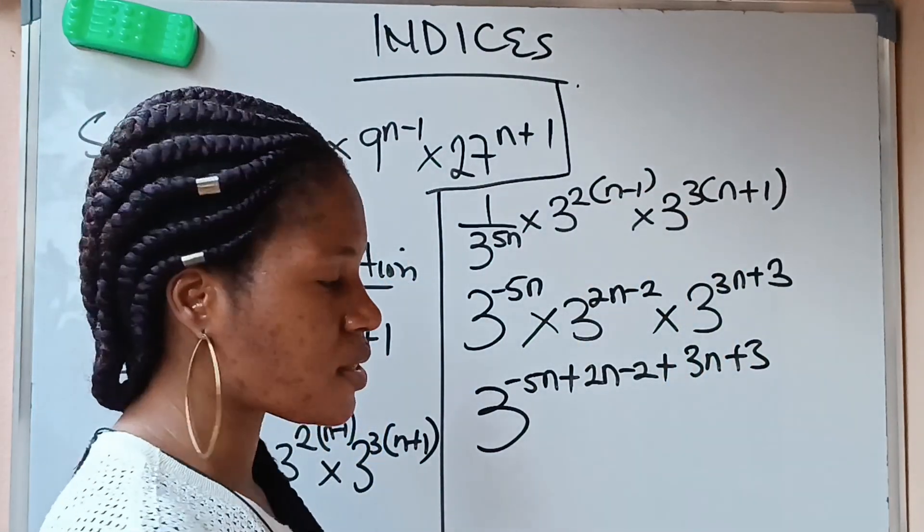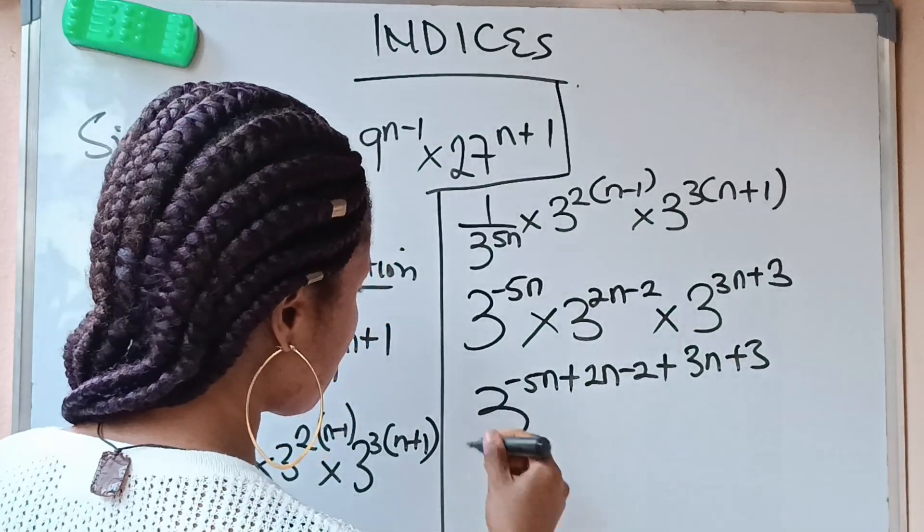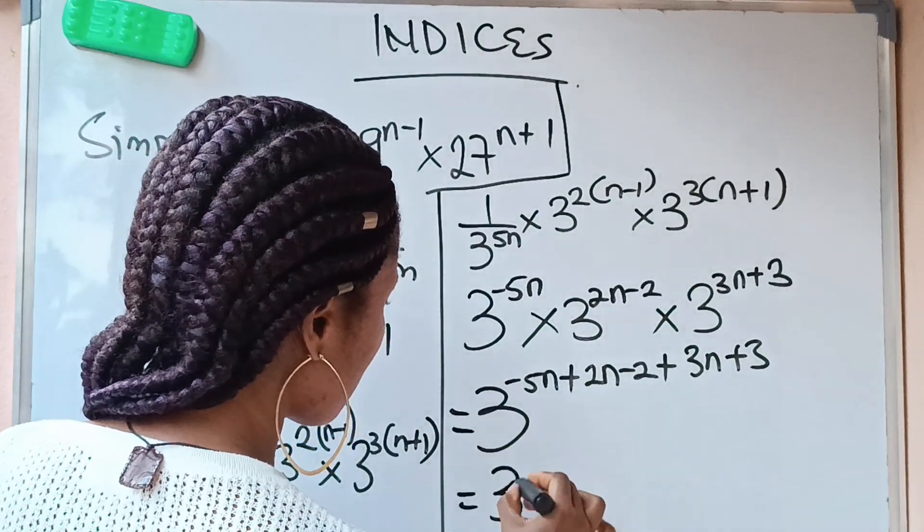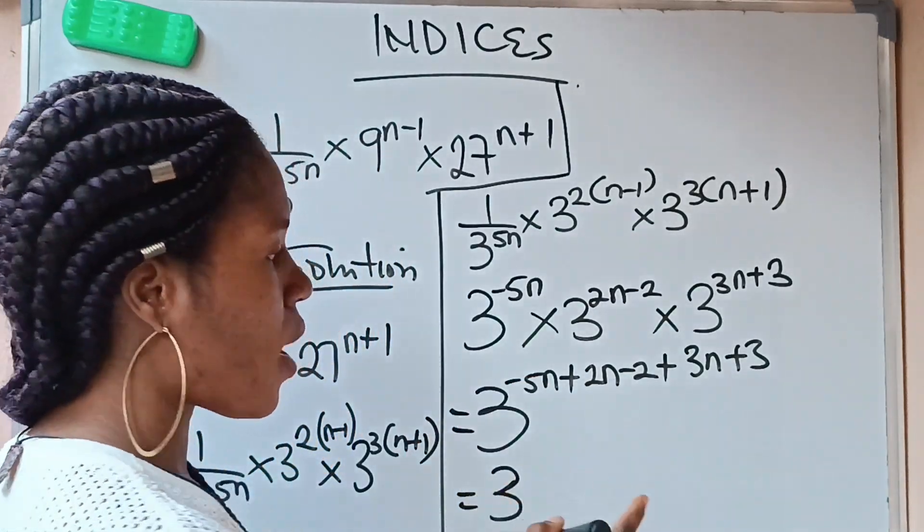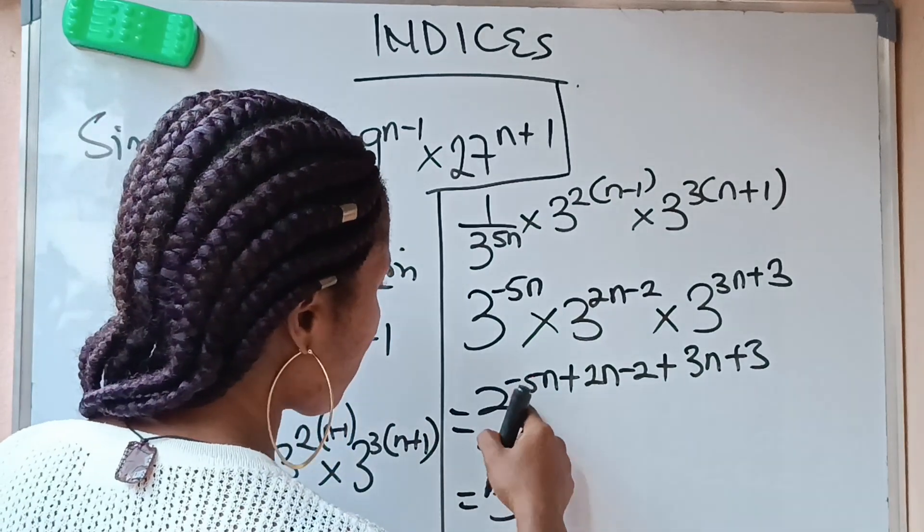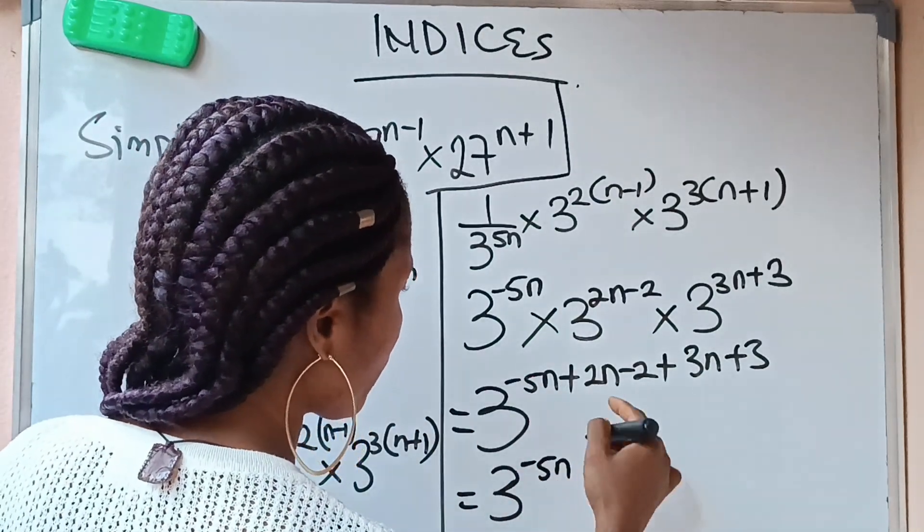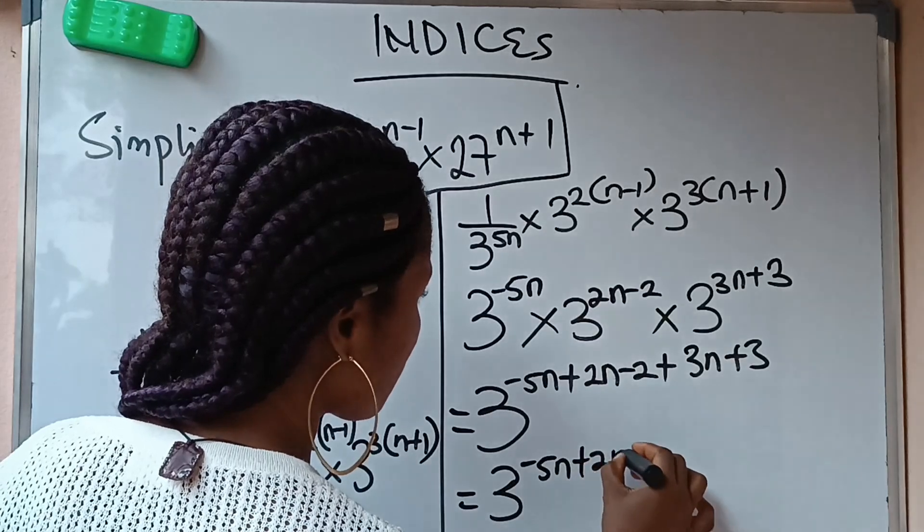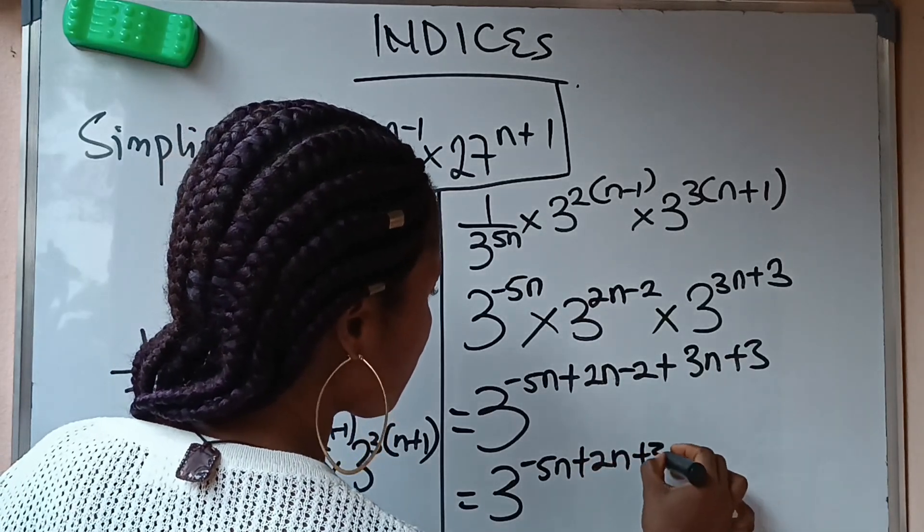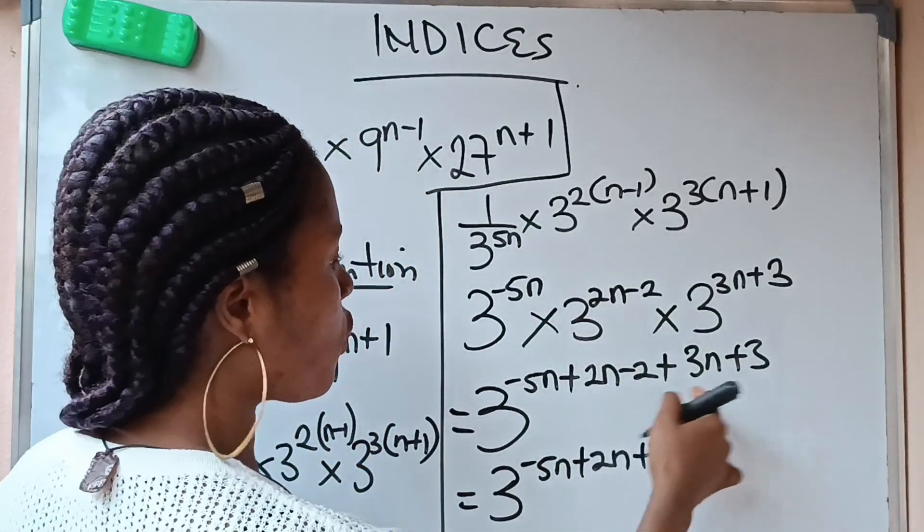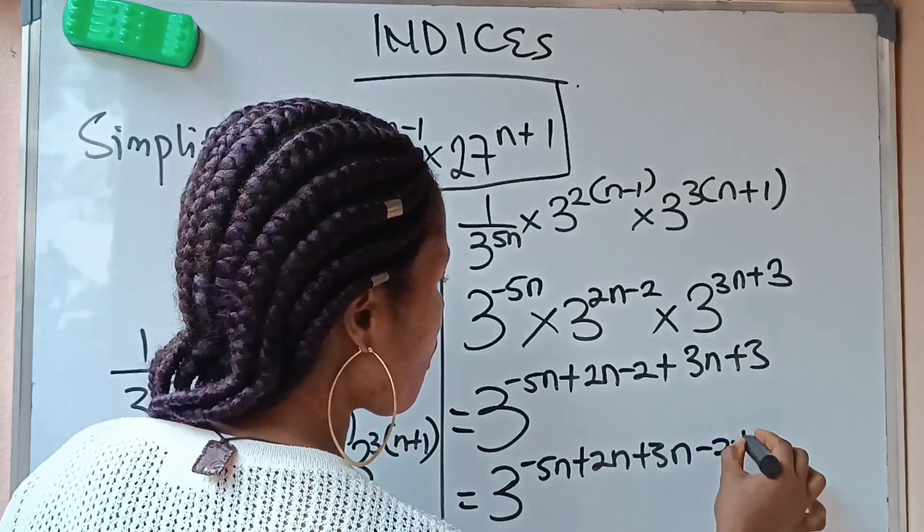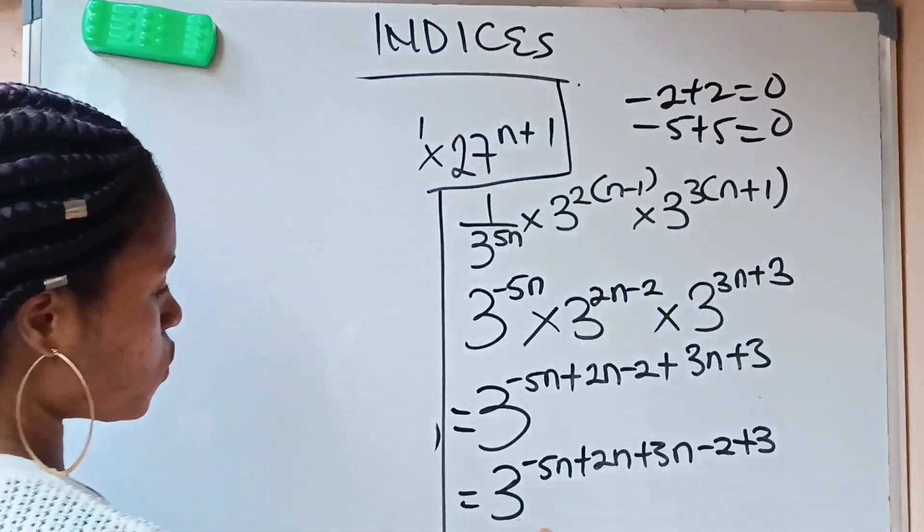You are adding the powers. Now let us go ahead and solve this. This is equal to 3 raised power of, we are going to collect like terms. Now we have minus 5n, we have plus 2n, we have plus 3n. Now let's collect, look for numbers. We have minus 2 and we have plus 3. So this is what we have.